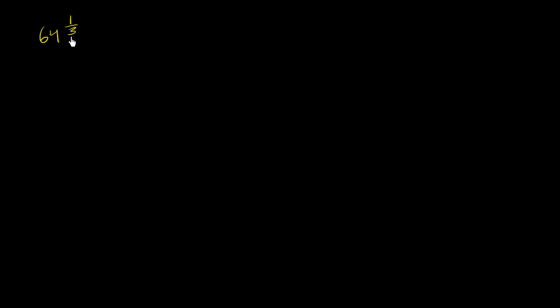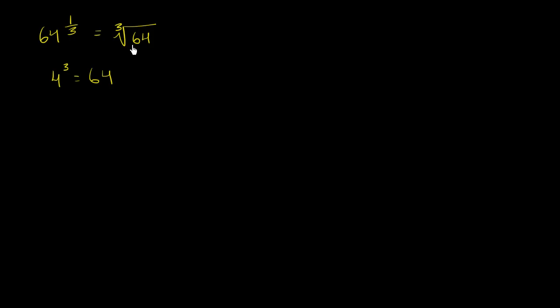We've already seen how to think about something like 64 to the 1/3 power. We saw that this is the exact same thing as taking the cube root of 64. Because 4 times 4 times 4, or 4 to the 3rd power, is equal to 64, we're looking for a number that times itself three times equals 64. We know that number is 4, so 64 to the 1/3 is 4.